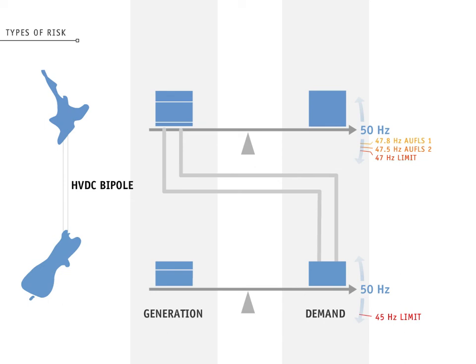Both islands are now back in balance. Under a high North HVDC transfer scenario, if the bipole trips, up to 32% of the North Island load may be disconnected due to the operation of AWFLS. A four to six hour process of redistributing generation and restoring the shed AWFLS and interruptible loads will be required to get things back to normal.